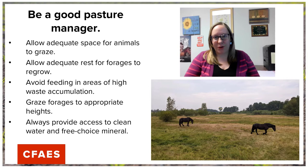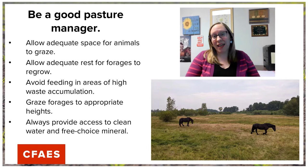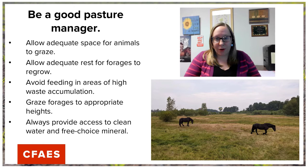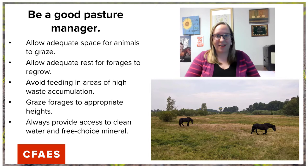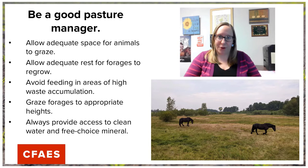Another factor is grazing forages to the appropriate heights. This helps avoid contact of animals with their own feces while grazing, and it also enables the healthiest plant regrowth possible by giving plants a chance to regrow and replenish energy in their storage structures, typically in the root zone. We always want to make sure we're providing access to clean water and free choice mineral that is species-specific to the animals in our grazing systems. If we're able to do all of these things in conjunction, we should have happy animals and happy forages too.